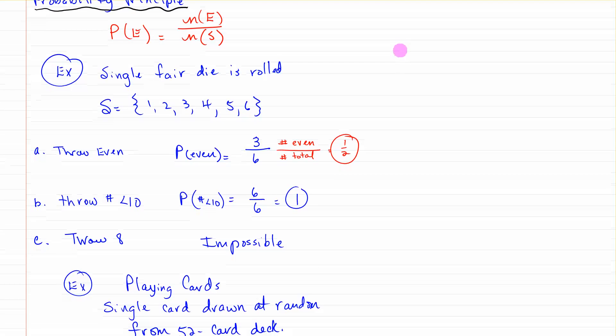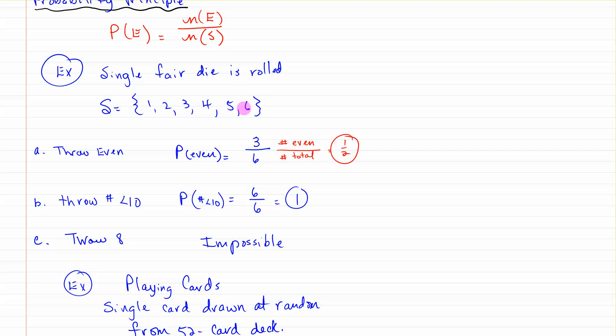Here's an example with dice. A single fair die is rolled, so the sample space is 1 through 6. So n(S) is 6. The probability that you're going to throw an even - well how many even numbers are there? 1, 2, 3. So that's the number of even over the number of total, so the probability is 1 out of 2. The probability that you will throw a number less than 10 - well there's 6 numbers on the die and all of them are less than 10, and the sample space was 6, so 100% probability that you will throw a number under 10. That you will throw an 8? Impossible.